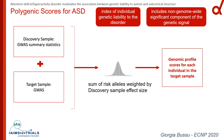That score is a measure of the genetic liability to the phenotype of interest. In our study, we used a discovery sample in which GWAS analysis had been performed on the ASD phenotype, and we used that to weight our GWAS results on the target sample to obtain polygenic scores for autism. Our aim is then to investigate the association between these polygenic scores for ASD and the brain phenotype — specifically, subcortical brain volumes.